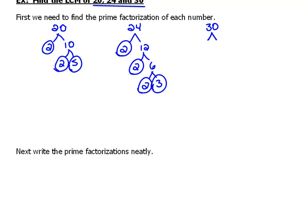30 would be 3 times 10. 10 would be 2 times 5. Now we have all prime numbers again.